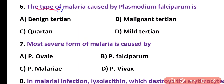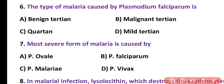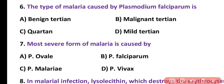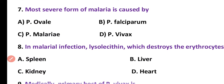Question number 6. The type of malaria caused by Plasmodium falciparum is: benign tertian malaria, malignant tertian, quartan, or mild tertian. Correct answer is option B. Malignant tertian malaria is caused by Plasmodium falciparum.